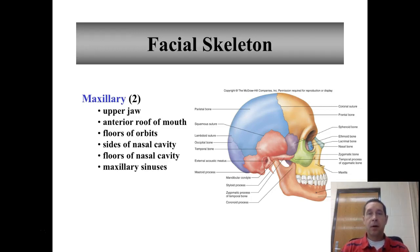In this next video we're going to talk about the bones of the face, the auditory ossicles, the hyoid bone, and the fontanelles that are found in infants. So let's talk first about the face. The first two bones we're going to talk about are the maxilla or maxillary bones.